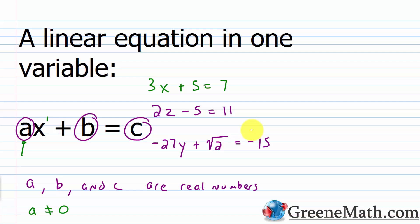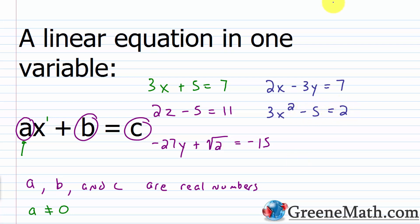Something that wouldn't be a linear equation in one variable: if you had two variables involved, like 2X minus 3Y equals 7. Or something with an exponent on the variable higher than 1, like 3X squared minus 5 equals 2. These two would not be examples of a linear equation in one variable.